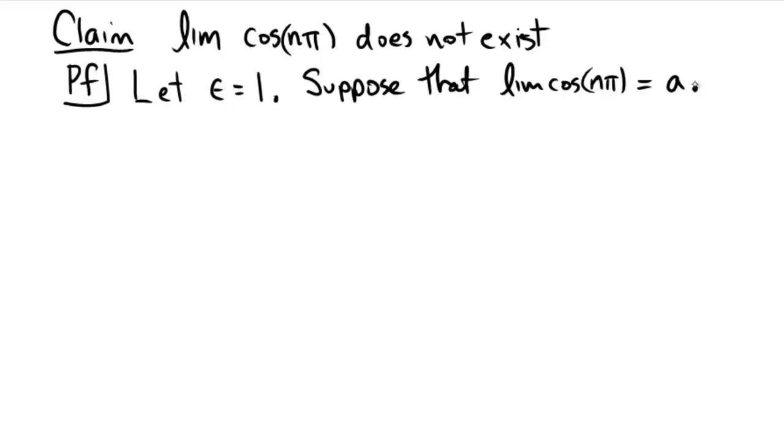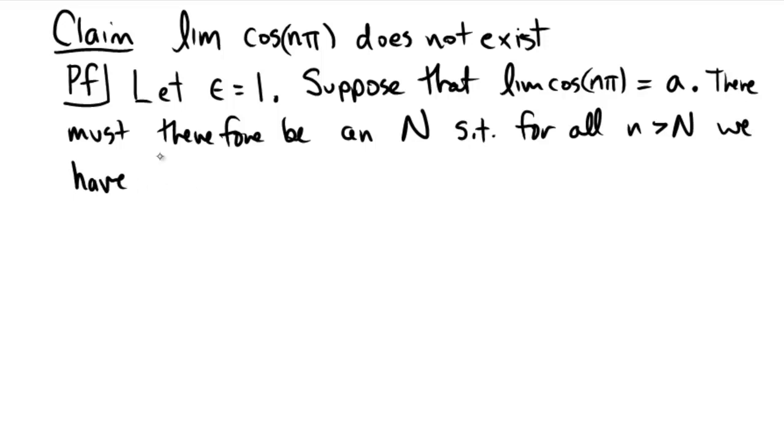Okay, so we're going to have it equal to a particular number. So now, what does that mean? By the definition of a limit, if this limit did exist, there must therefore be an N such that for all n bigger than N, then we have cosine of n pi minus a is going to be able to be made less than epsilon, where epsilon in our case, since we're letting epsilon equal 1, must be able to be made less than 1.